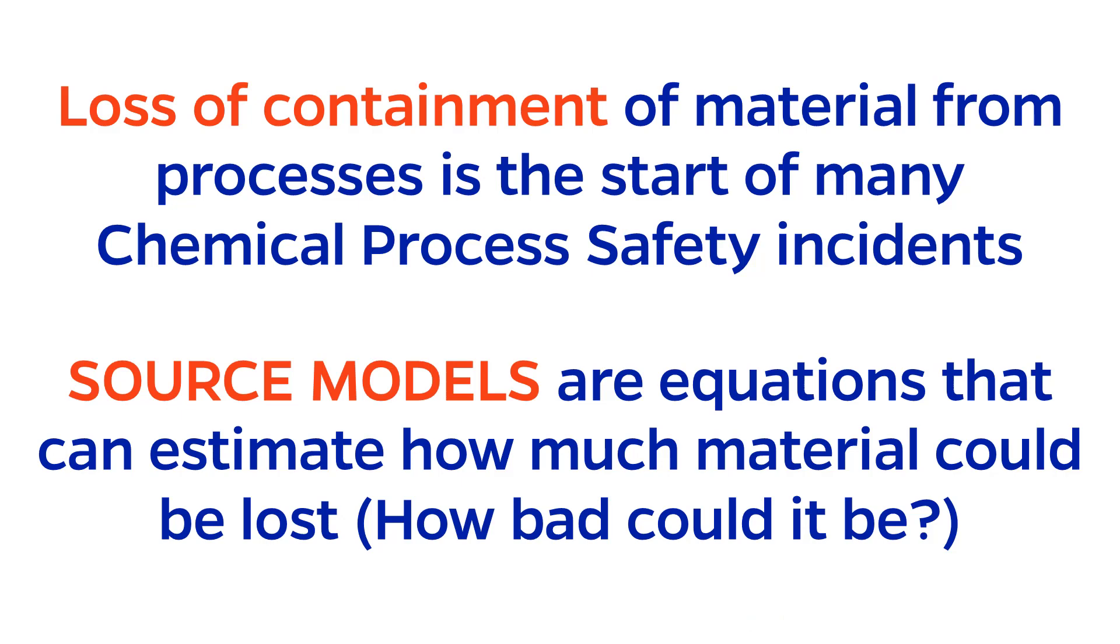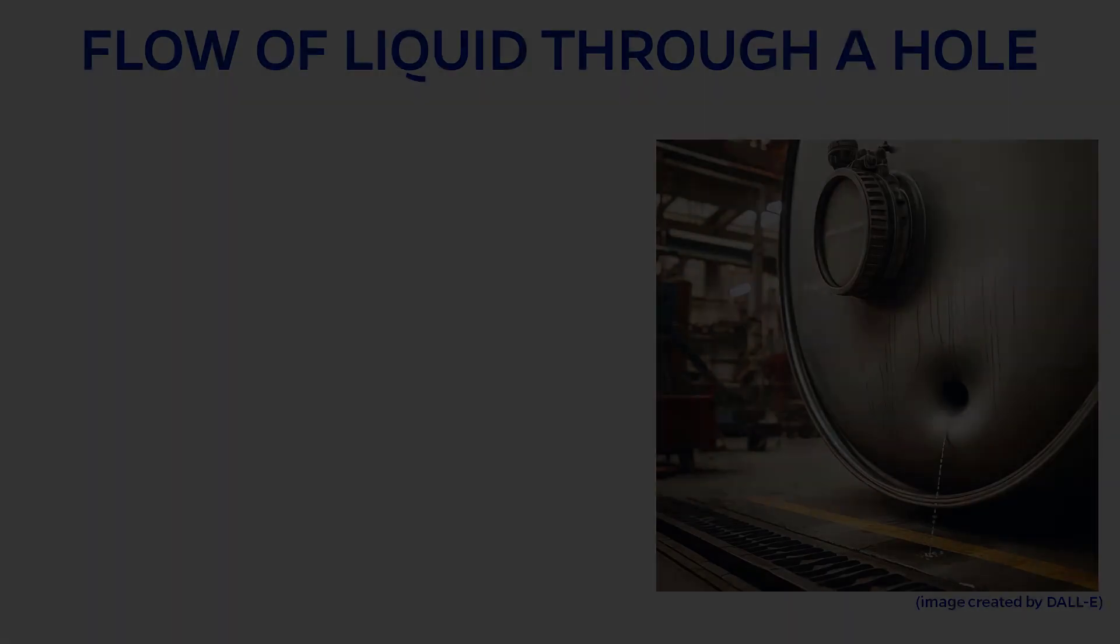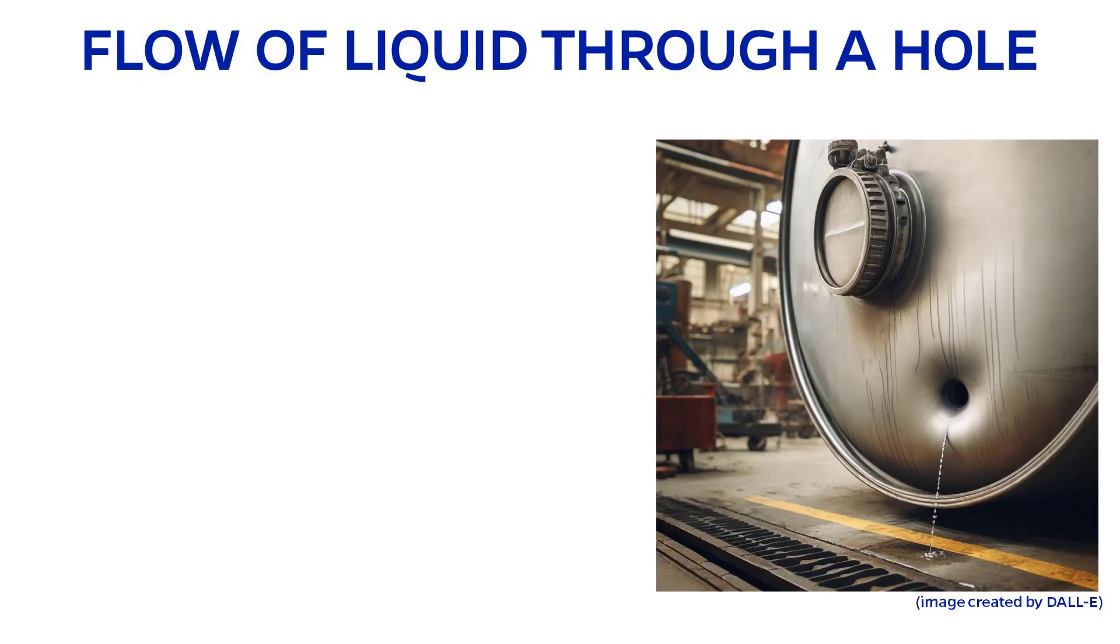Source models are important because they answer one of the key fundamental process safety questions, which is how bad could an incident be? Let's look at an example of a source model. Let's say that we wanted to calculate how much liquid chemical we could lose through a hole.